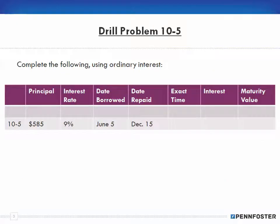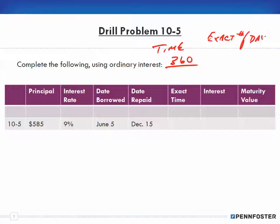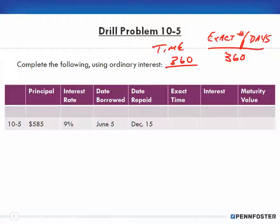Problem 10-5: calculate the following using ordinary interest. Remember, ordinary interest uses 360 days in a year — it's the exact number of days divided by 360. I have a principal of $585, an interest rate of 9%, borrowed on June 5th and repaid on December 15th. We need to determine how many days are between those two dates.